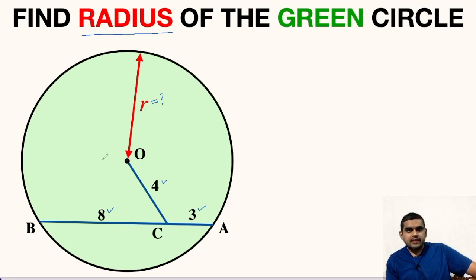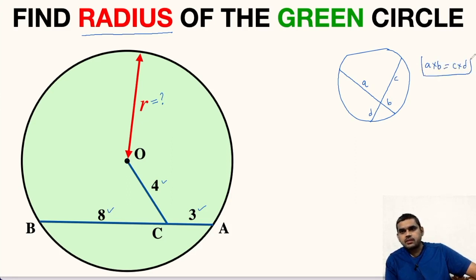In order to find the radius of this circle, we will use intersecting chords property of a circle. Let us understand what is this theorem. According to this property, if we have a circle and there are two chords which are intersecting each other like this, then if the length is A, B, C and D like this, then A times B is equal to C times D. This is the property that we are going to use in this given figure.